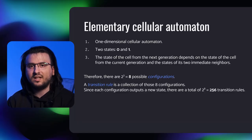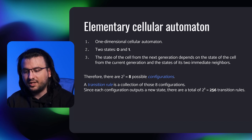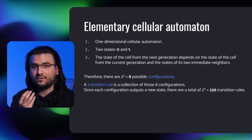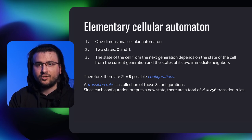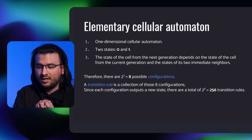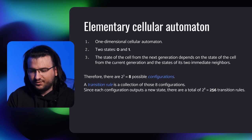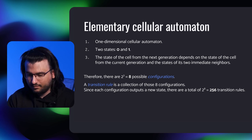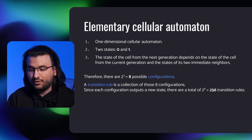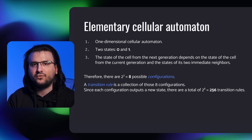Our next and final example is inspired by Konrad Klitschkovsky's implementation of Game of Life using store — link to the article is in the description. We will build an elementary cellular automaton: a one-dimensional cellular automaton where each cell can have one of two states (zero or one), and the state of a cell in the next generation depends on its current state as well as its two immediate neighbors — three values in total. Each value is either zero or one, giving 2³ = 8 possible configurations. A transition rule is a collection of those eight configurations, and since each configuration outputs a new state there are 2⁸ = 256 transition rules.